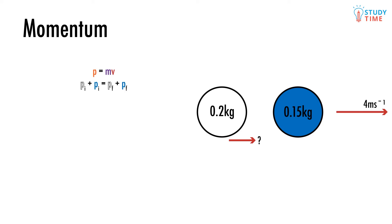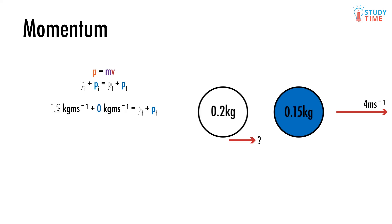We use the equation p equals mv and we end up with 1.2 kilograms meters per second. Great. Now here's what the situation looks like after the collision. As you can see, both of the balls are now moving.